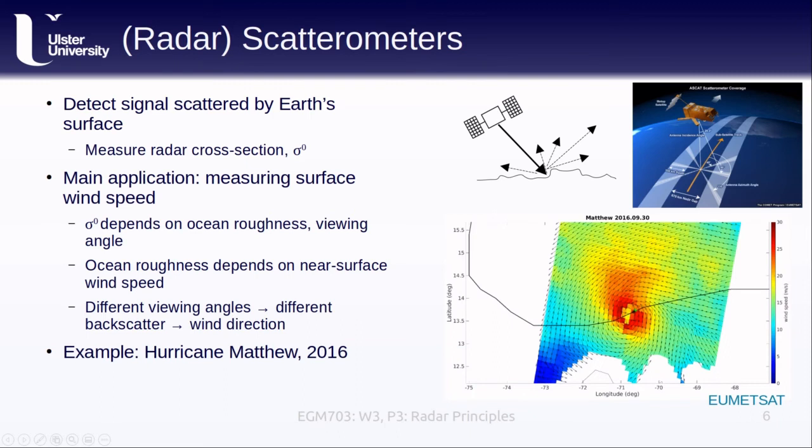This example shown here provided by EU Metsat shows the measured wind field of Hurricane Matthew in September 2016. We can clearly see here the spiral pattern of the storm which is measured over a very large area.